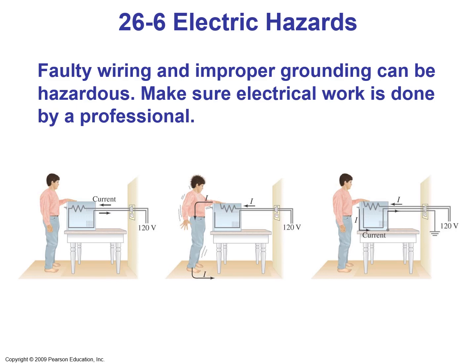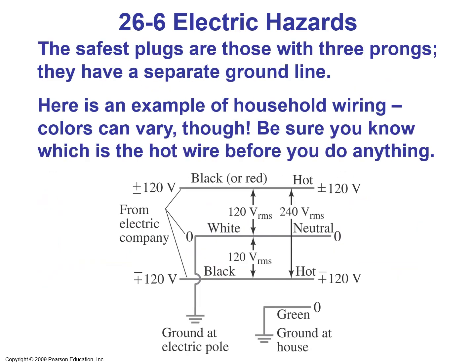A faulty device like a hair dryer, when touched while also touching a water faucet, completes the circuit and electricity can be lethal. Faulty wiring and improper grounding can be hazardous — make sure electrical work is done by a professional. The safest plugs are those with three prongs, which have a separate ground line that directs current through the device ground rather than through the body of the person using it.